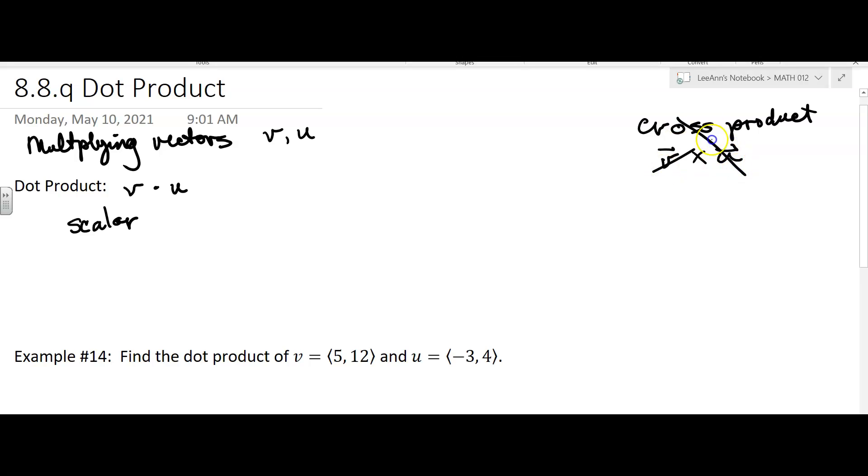To do a dot product, let's say your vector V is aI plus bJ. You know what, in the book they put it in component form. You can do it in either form, but I'll be consistent with the book in case you're looking it up.